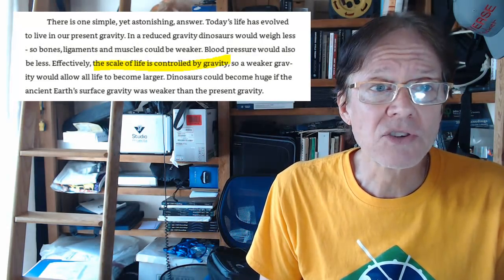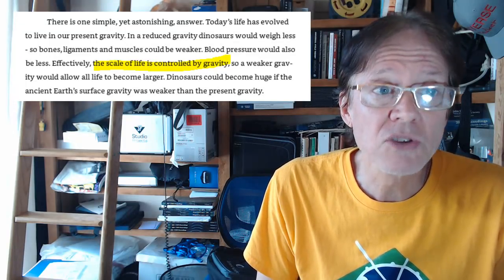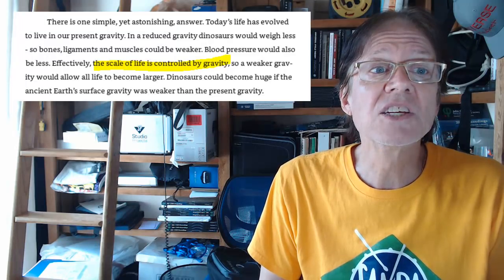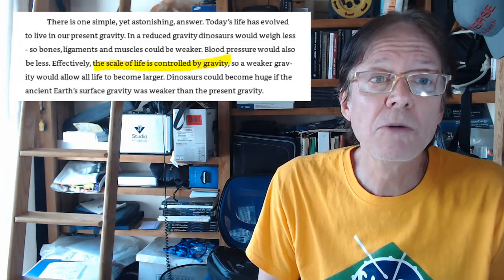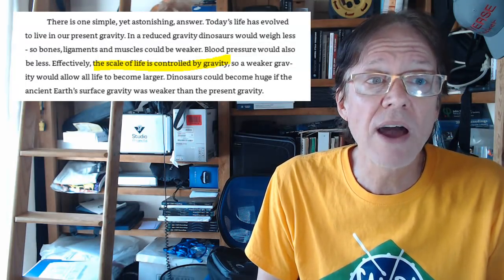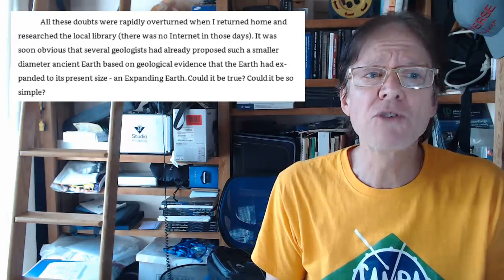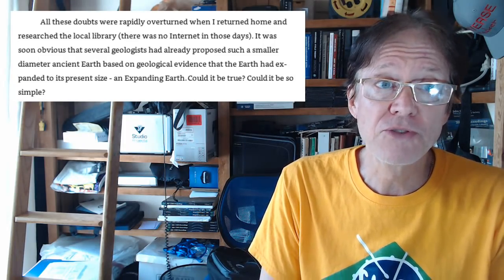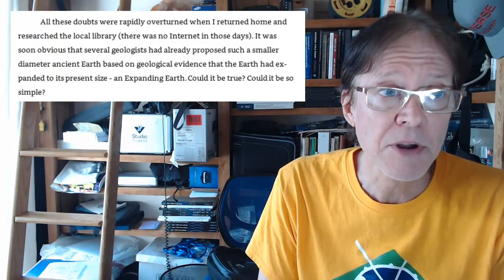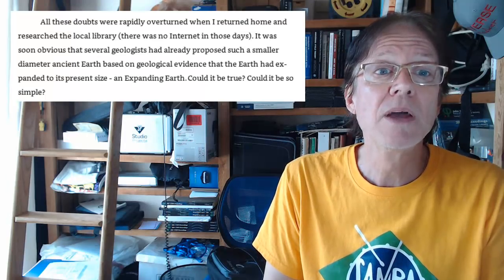Here was the essential paradox of the dinosaurs' large size. Their bones should buckle and crack under today's gravitational field or gravitational force. There is one simple yet astonishing answer. Today's life has evolved to live in our present gravity. In reduced gravity, dinosaurs would weigh less, so bones, ligaments, and muscles could be weaker. Blood pressure would also be less. Effectively, the scale of life is controlled by gravity. So a weaker gravity would allow all life to become larger. Dinosaurs could become huge if the ancient Earth's surface gravity was weaker than the present gravity. Huge implications, of course. All these doubts were rapidly overturned when I returned home and researched the local library. There was no internet in those days. It was soon obvious that several geologists have already proposed such a smaller diameter ancient Earth based on geological evidence that the Earth had expanded to its present size. An expanding Earth. Could it be true? Could it be so simple?